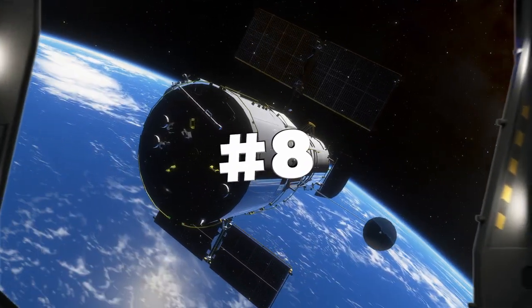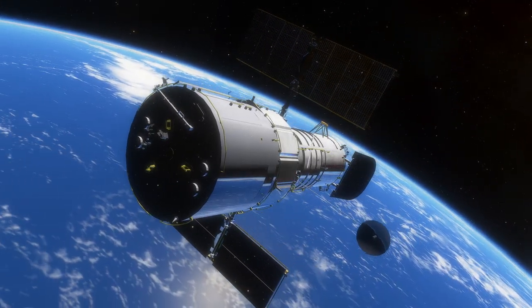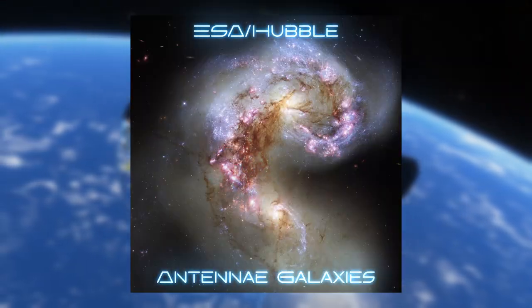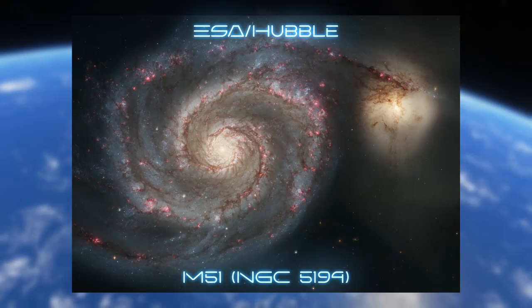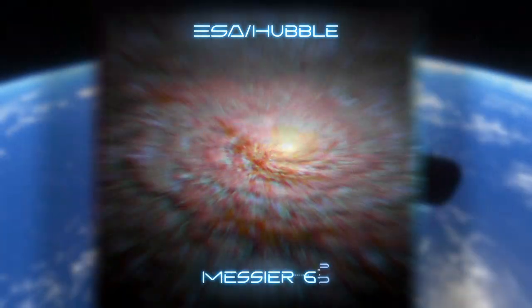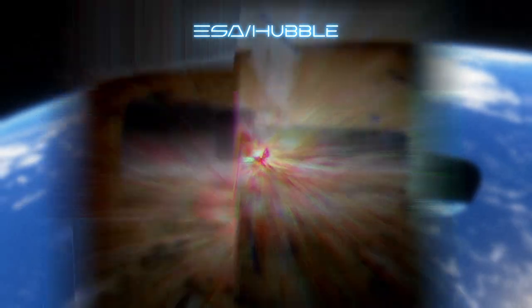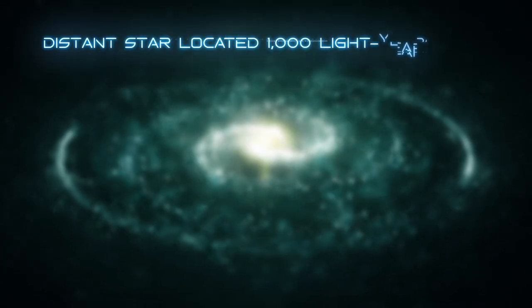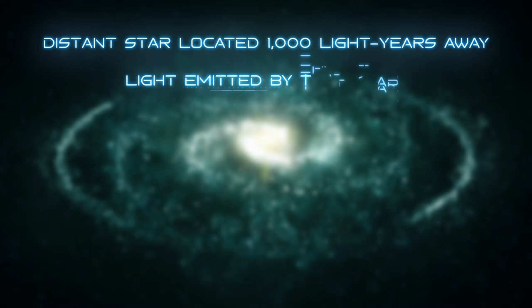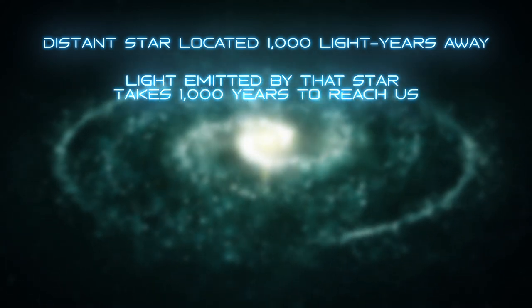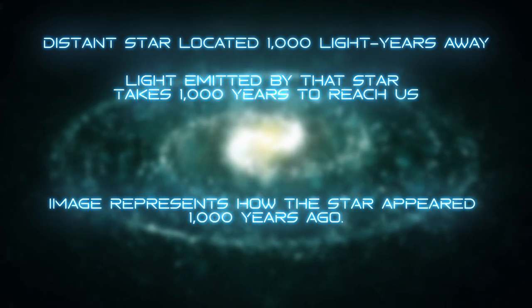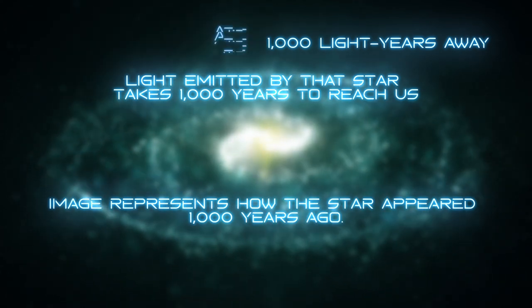Number 8. The Hubble Space Telescope has captured images of galaxies that are billions of light-years away, providing a glimpse into the distant past. To understand why we observe objects in space as they were in the past, consider the following scenario. Let's say we observe a distant star located 1,000 light-years away. This means that the light emitted by that star takes 1,000 years to reach us. Therefore, the image we captured today represents how the star appeared 1,000 years ago.